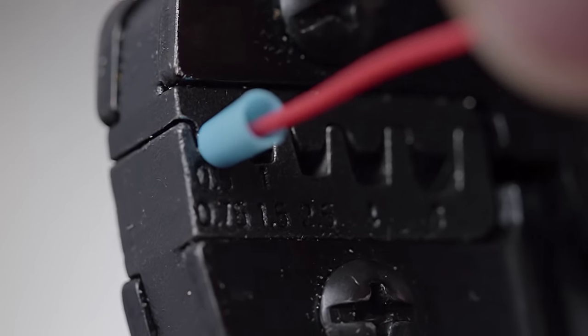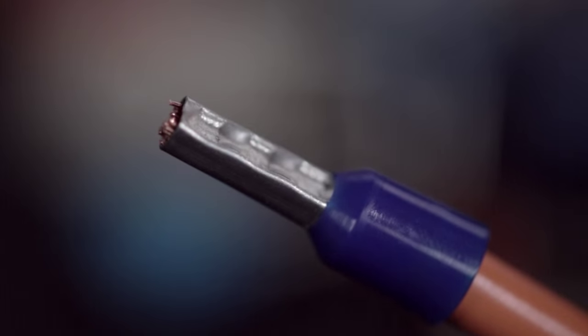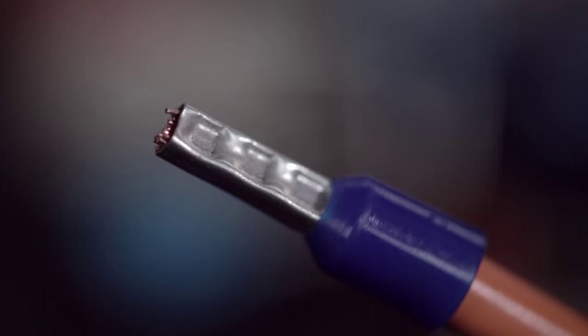Ratchet the handle to compress the crimp. This gives you a solid end to the multi-strand wire that contacts can attach to.